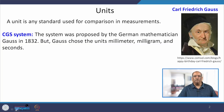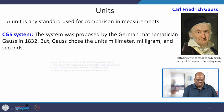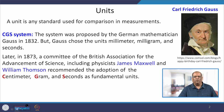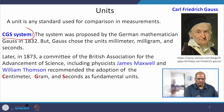The first system is called the CGS system. It was proposed by German mathematician Carl Friedrich Gauss in 1832, who chose units in terms of millimeter, milligram, and seconds. Later in 1873, a committee of the British Association for the Advancement of Science, including physicists like James Maxwell and William Thomson, recommended the adoption of centimeter, gram, and seconds as the fundamental units — hence the name CGS system.